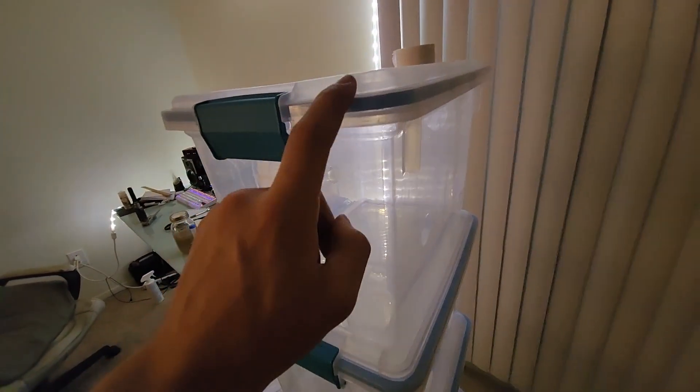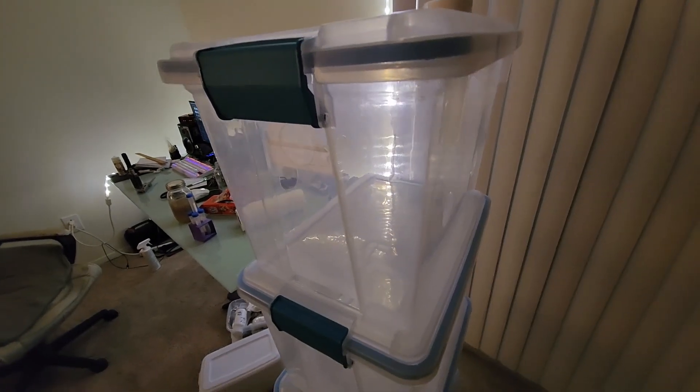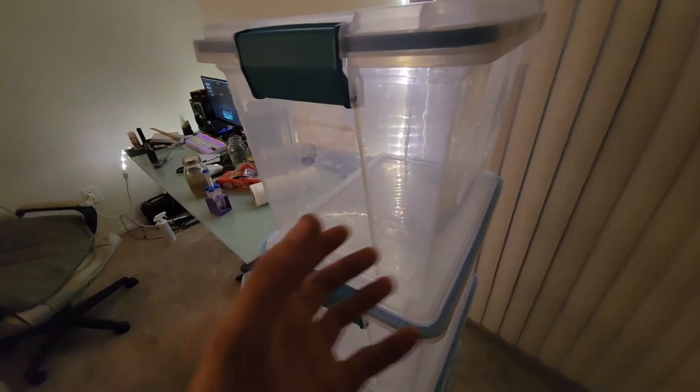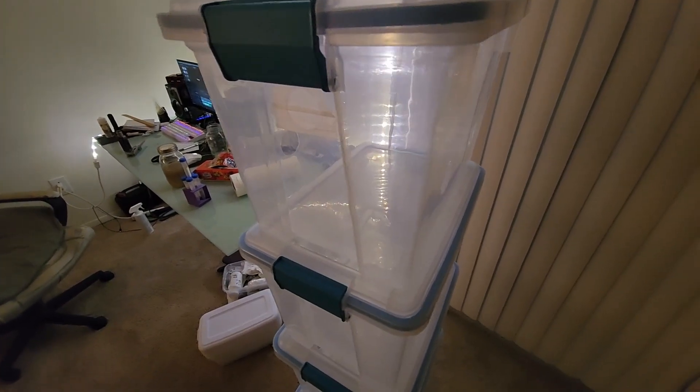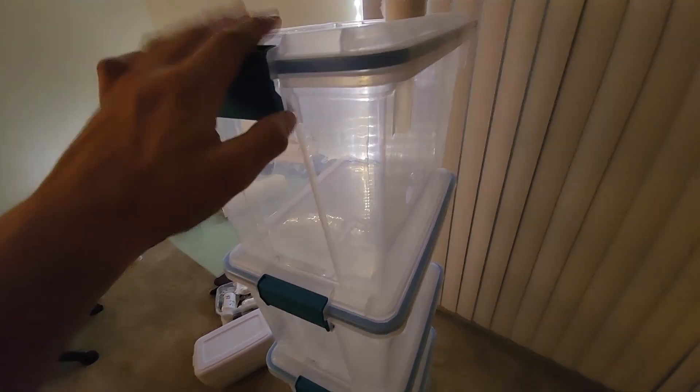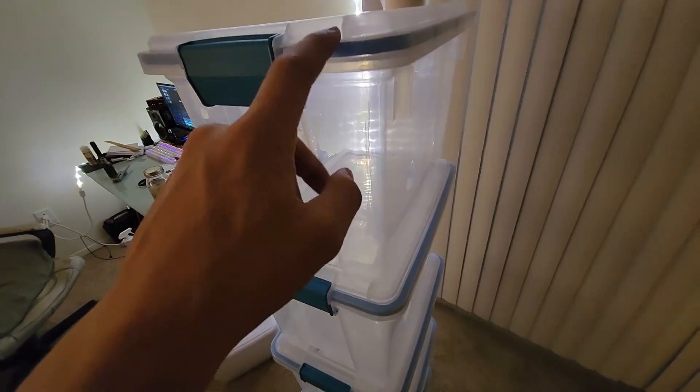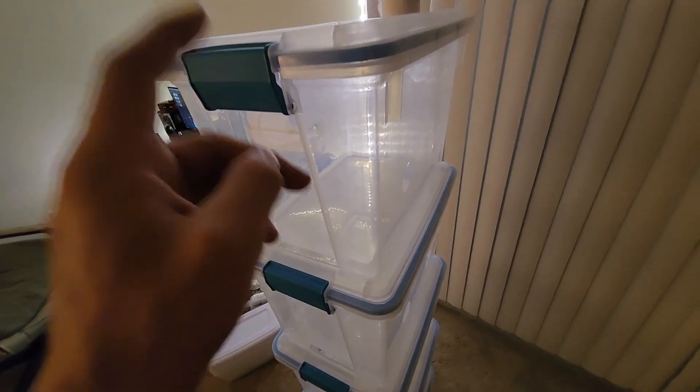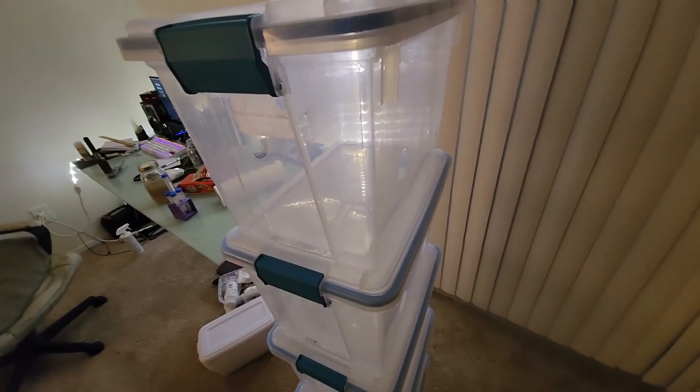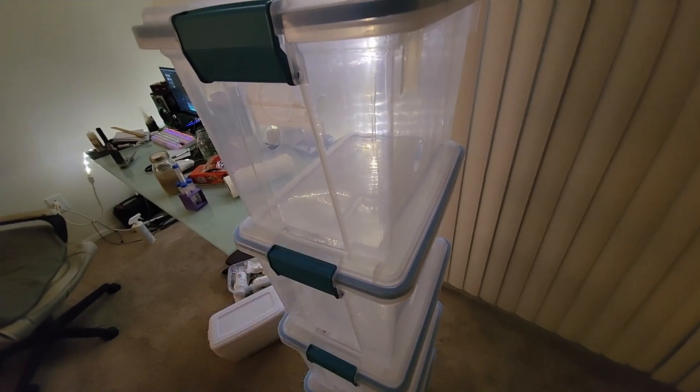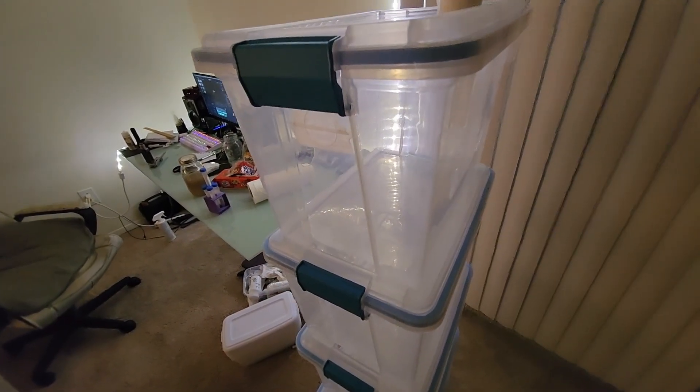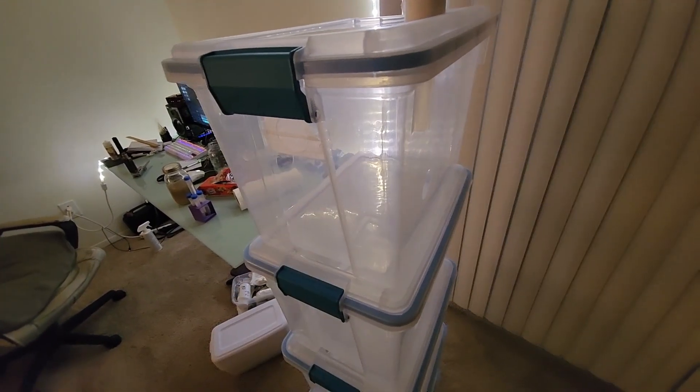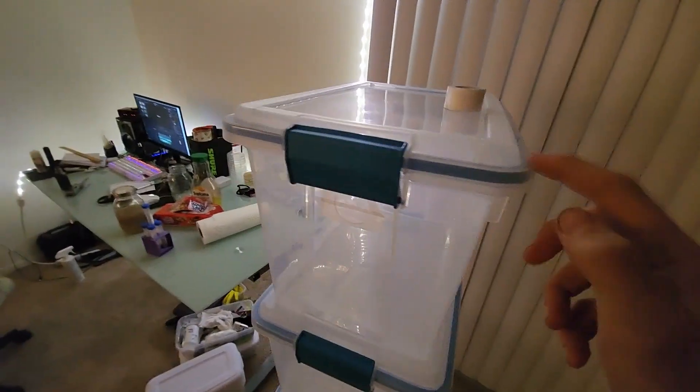And the reason I use these tubs is because it creates like a semi-sterile, not really, but a clean enough environment that when I put it straight into fruiting condition, I spawn the tub and I don't open it until I take the fruits out, which makes the spores from the fruits pretty clean. And that's why I like these gasket tubs.